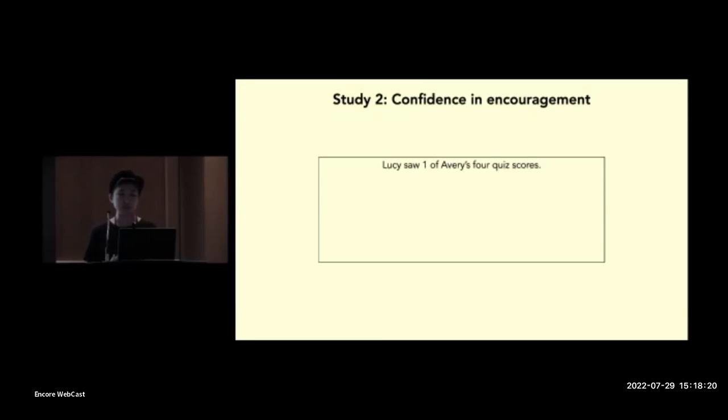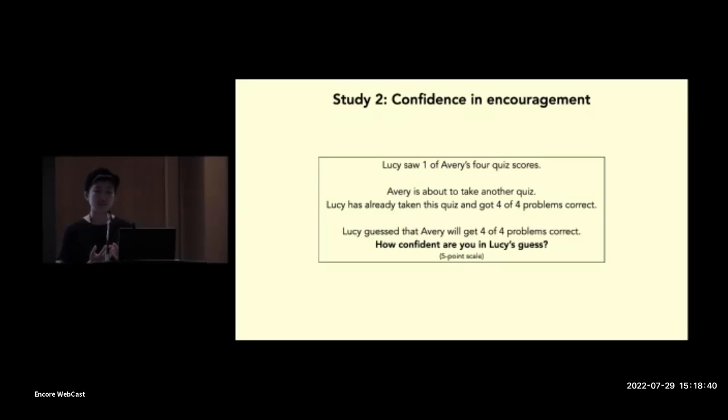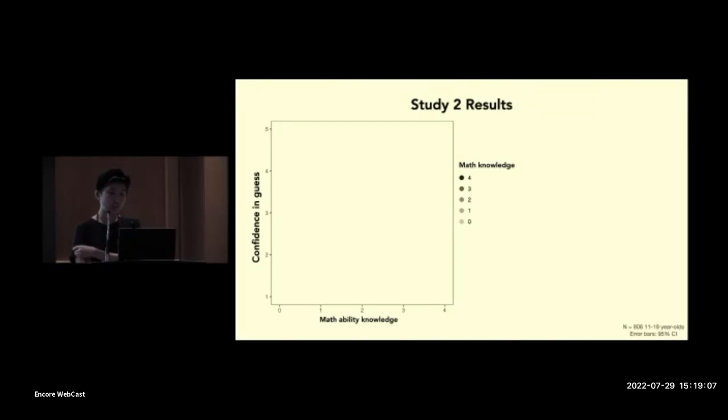Okay, so here's what happened on each trial. We introduced them to two people and said this. Lucy saw one of Avery's four quiz scores. Avery's about to take another quiz, a fifth quiz. Lucy has already taken this quiz and got four of four problems correct. She got all of them right. And Lucy guessed that Avery will also get all of them right. And our question that we asked participants was, how confident are you in Lucy's guess? And so what we did is we parametrically varied the speaker's knowledge about the student's abilities. So speakers may have seen zero to four of the scores, of the student's past scores. And we also varied the speaker's own performance on the quiz scores, on the quiz. So the speaker could have gotten between zero and four points on it. Okay, so that means that there were 25 possible trials in total. And again, the question that we asked participants was, how confident are you in the speaker's guess? And just to clarify here, the speaker always guessed that the student would get all of the problems correct.